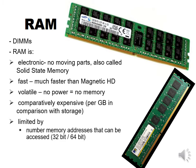RAM is limited by the number of memory addresses that can be accessed. If you have a 32-bit operating system you can access far less RAM — only four gigabytes — than if you have a 64-bit operating system. Also, the number of RAM slots on your motherboard will limit the amount of RAM you can put into your computer.